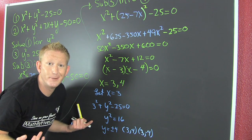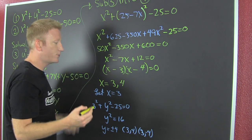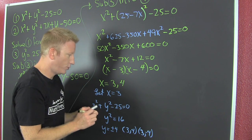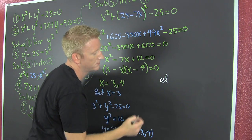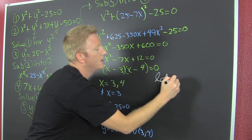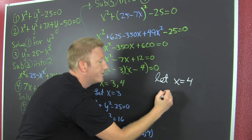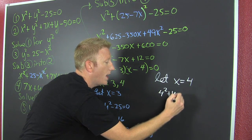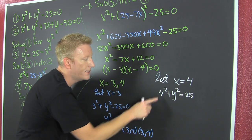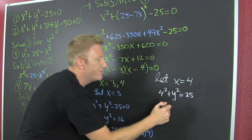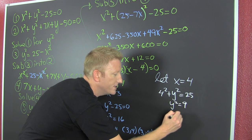Now I want to check the other one when x equals 4. So now we're gonna let x equal 4 and when we do we plug it into the original and we're gonna get 4 squared plus y squared equals 25. I went ahead and put the 25 over there. We see that 16, 25 minus 16 is 9.